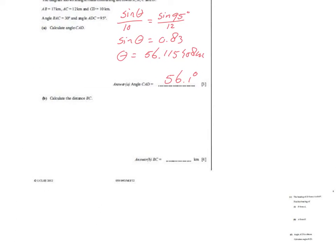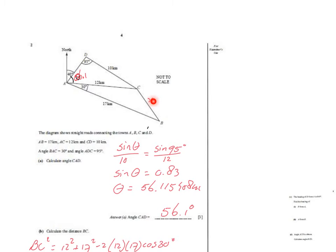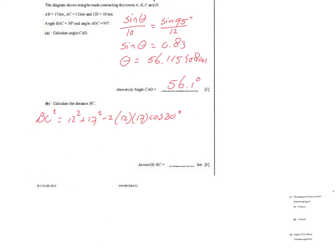Writing down the cosine rule: BC² equals 12² plus 17² minus 2 times 12 times 17 times cosine of 30°. It's the unknown side squared equals the two known sides squared, minus 2 times those sides times cosine of the included angle. Working it out, BC unrounded is 8.925336703, which to three significant figures is 8.93 km. I'll put that in the diagram too.